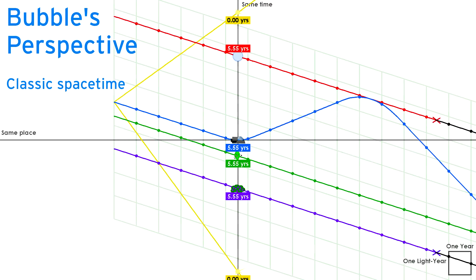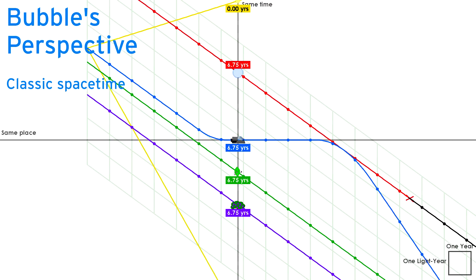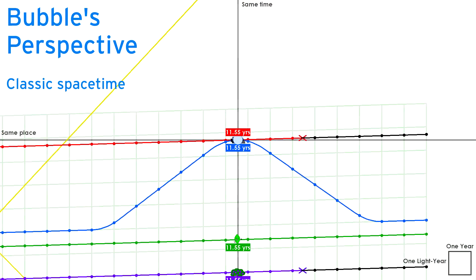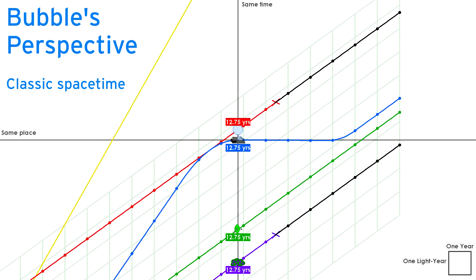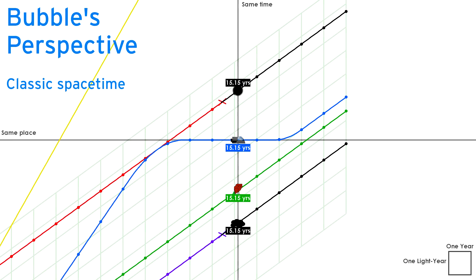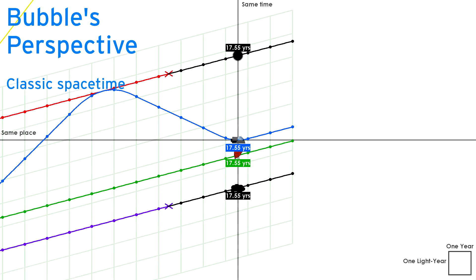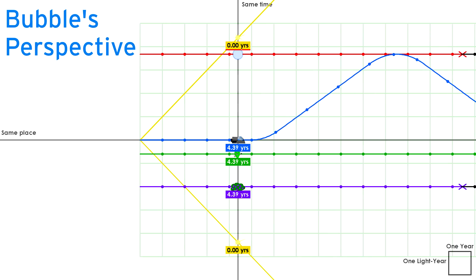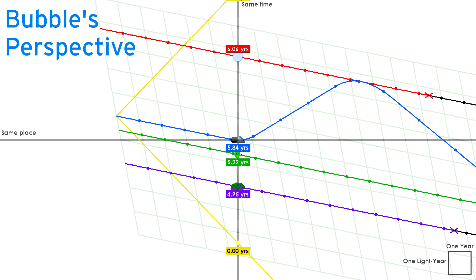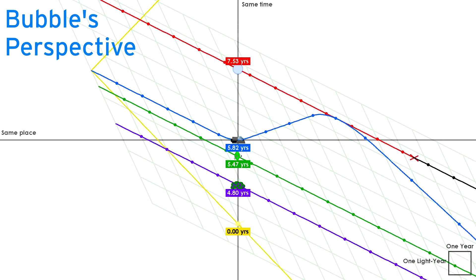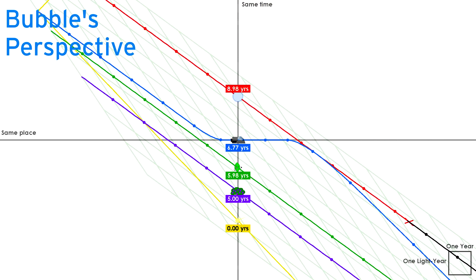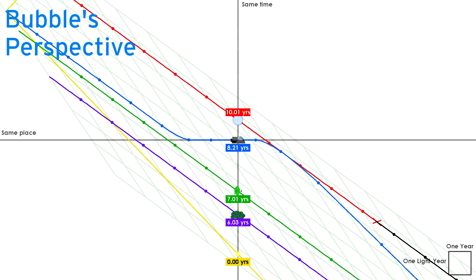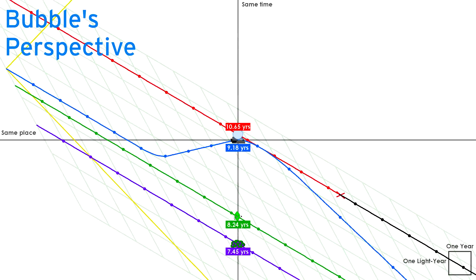Here's the classical view of spacetime. And here's the warpy view of spacetime. All other spacetime animations in this video will also be darkened. Gloomy, I know, but it's the small price you have to pay for clarity.